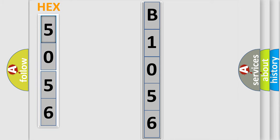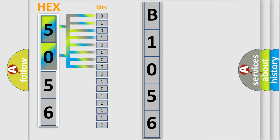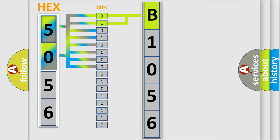The error code is split into two bytes consisting of 16 bits. One bit is the basic unit that each computer works with. The bit has two logical states: zero, low level, and one, high level. By combining the first two bits, the basic character of the error code is expressed.